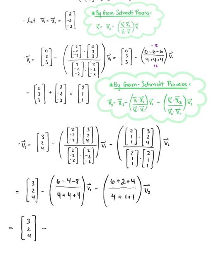Notice in the numerator we have -6/12, and in the second ratio we have 12/6 — how cute is that? With the first expression, we have minus a -1/2, so this is +1/2 times vector v₁, which is (2, -2, -2). Then this will be minus 2 multiplied by vector v₂, which is (2, 1, 1).